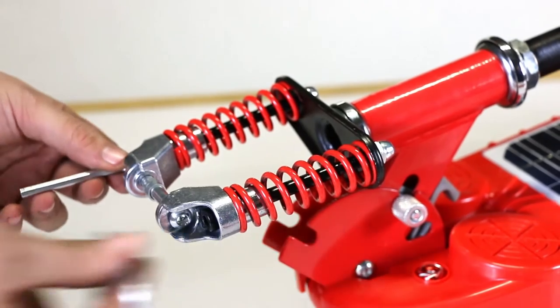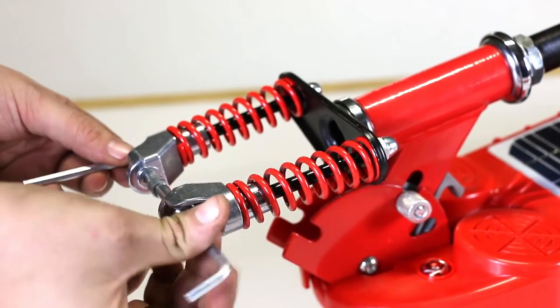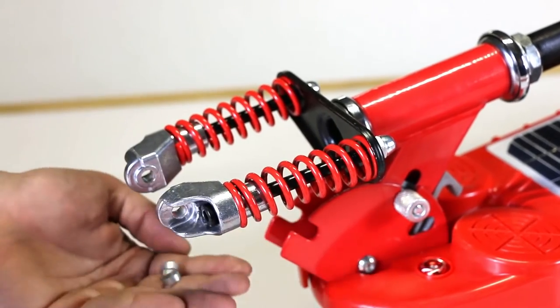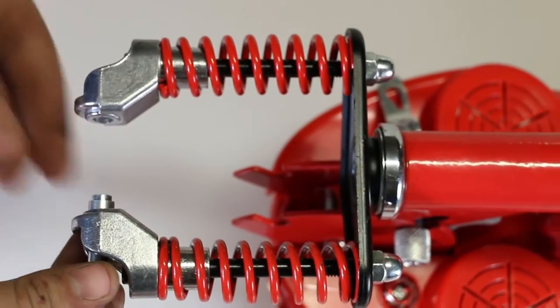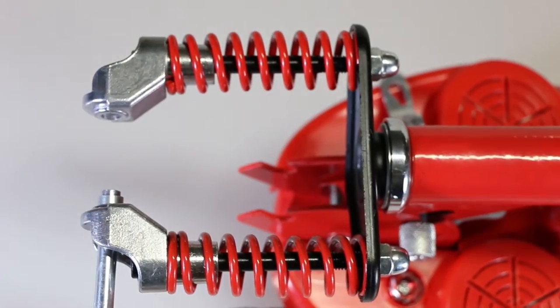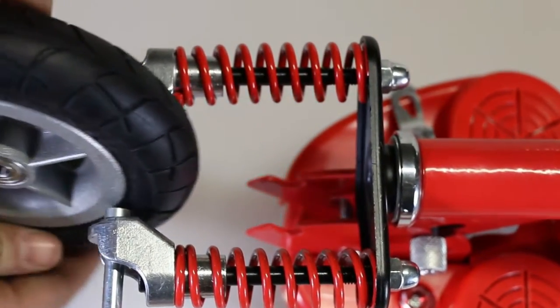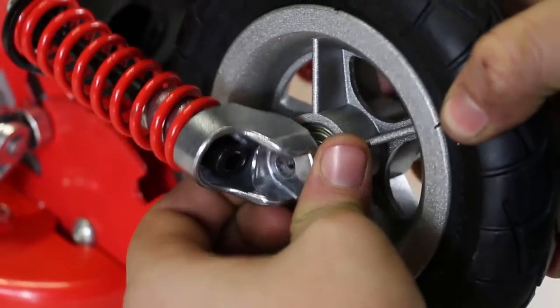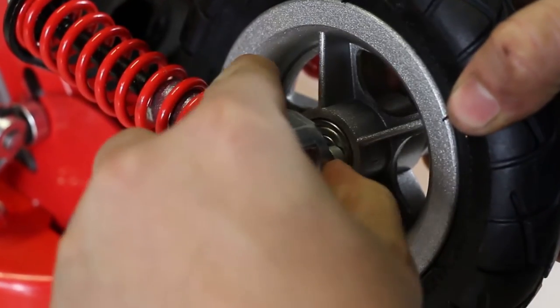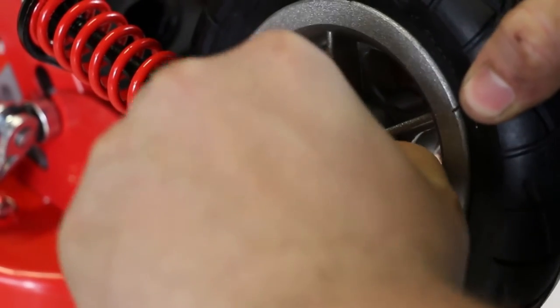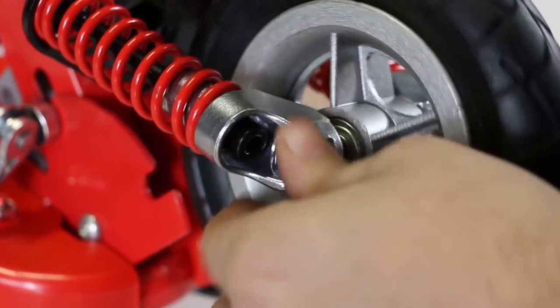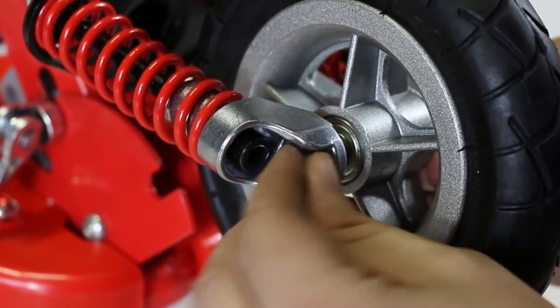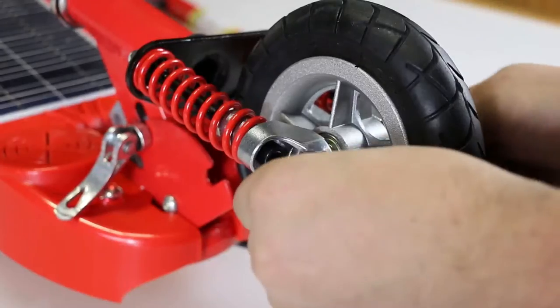To install the front wheel, use two allen wrenches to remove the axle. Slide the axle through one side of the fork and place the spacer. Line up the wheel with the axle and push the axle through the wheel. On the other side of the wheel, insert the other spacer before pushing the axle all the way through the fork. Affix the nut on the axle and tighten it.